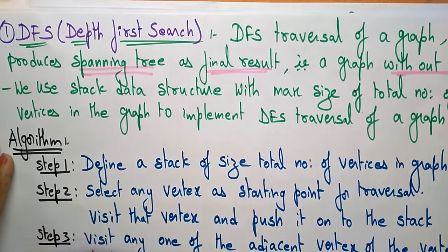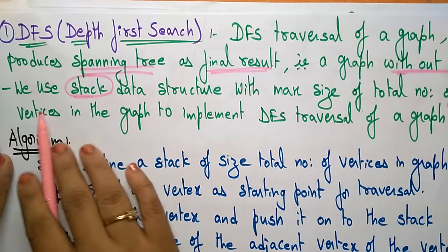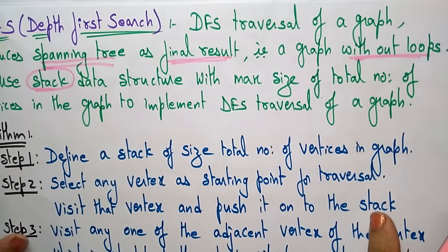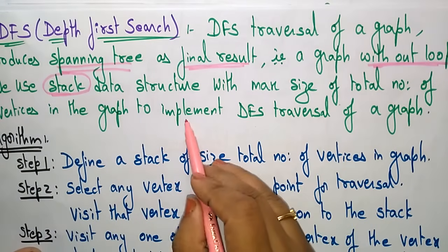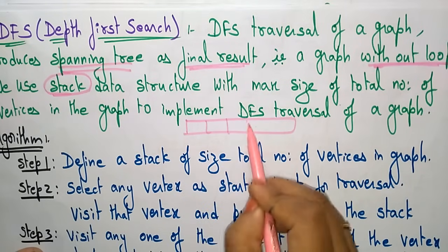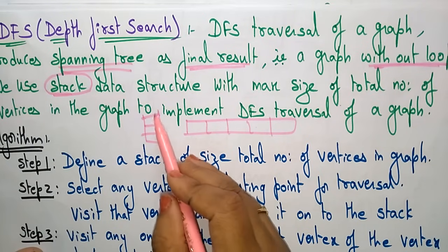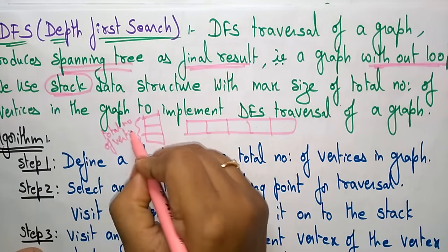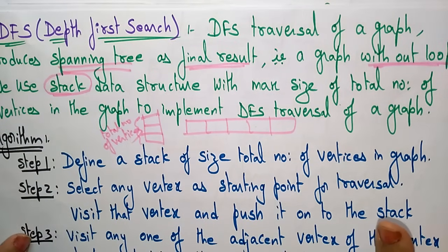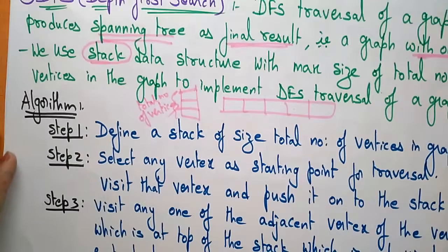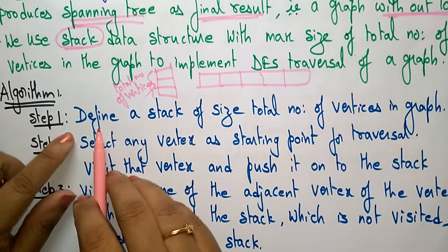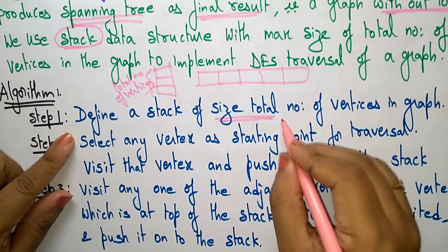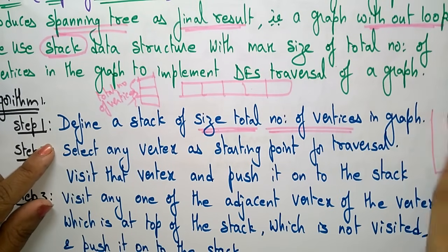Depth first search uses a stack data structure with a maximum size equal to the total number of vertices in the graph to implement DFS traversal. The maximum size of the stack is nothing but the total number of vertices present in the graph. Let me explain the algorithm first, then an example.